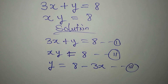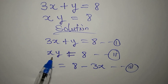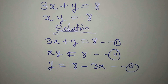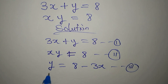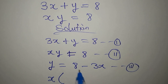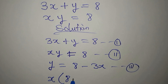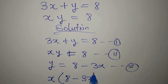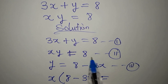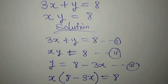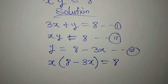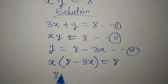The next step is to substitute equation 3 into equation 2. Our equation 2 is x times y equals 8. Now x stays, and in place of y I write 8 minus 3x, and this equals 8.